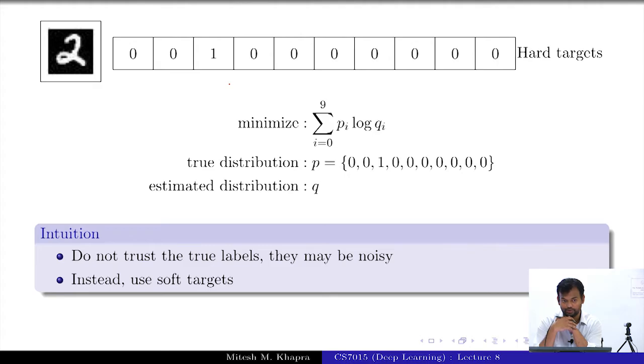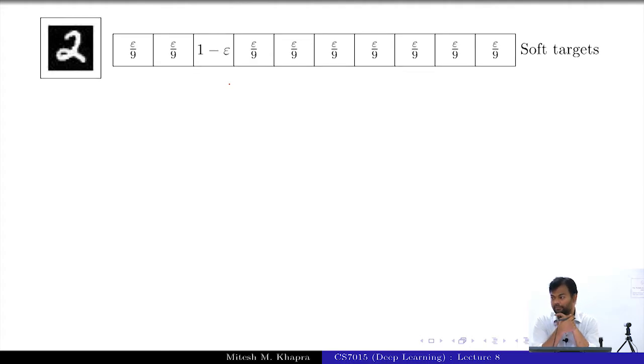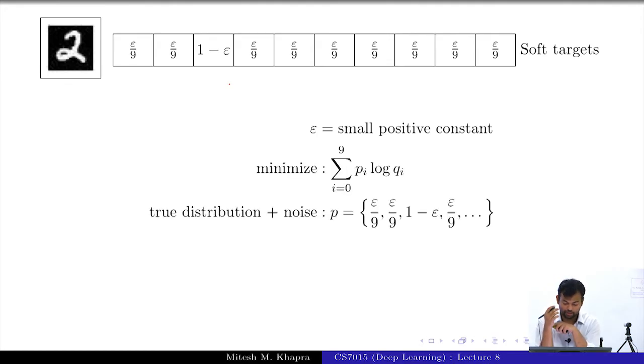So, instead what we will do is we will use soft targets. So, this is what I mean by soft target: assume that there was some epsilon noise in your labels. So, instead of treating that as one and all zeros, treat the true label as 1 minus epsilon and divide that among the remaining 9 entities, right, that probability mass divided among the remaining 9 entities. So, now when you are trying to minimize this, what is P_i? This soft distribution, right, and Q_i is the predicted distribution.